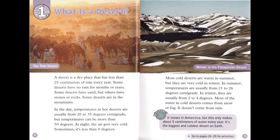Chapter 1: What is a Desert? A desert is a dry place that has less than 25 centimeters of rain every year. Some deserts have no rain for months or years. Some deserts have sand, but others have stones or rocks. Some deserts are in the mountains. In the day, temperatures in hot deserts are usually from 20 to 35 degrees centigrade, but temperatures can be more than 50 degrees. At night, the air gets very cold.